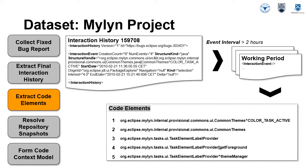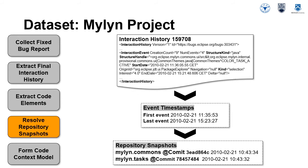As a result, we break interaction histories into working periods. In our dataset, a working period consists of a portion of the events in an interaction history within a two-hour time period. We are only interested in interaction histories recording work with code elements as opposed to documentation or configuration files. Thus, we filtered for interaction histories accessing or editing Java code elements.